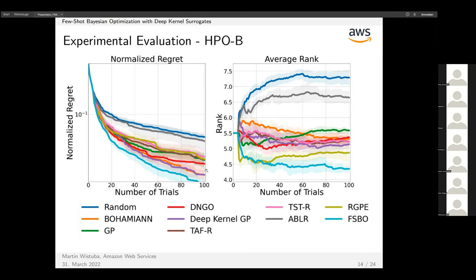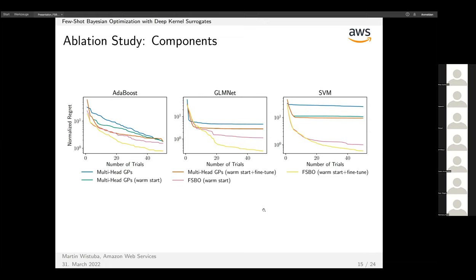That's the next benchmark, mostly run by Sebastian and Hardy. It's a very similar picture—we have different baselines here. The transfer ones are TF, TST, ABLR, and RGP, but overall the picture is very similar showing that FSBO is doing quite well. In their scenario, they didn't even use warm starting.